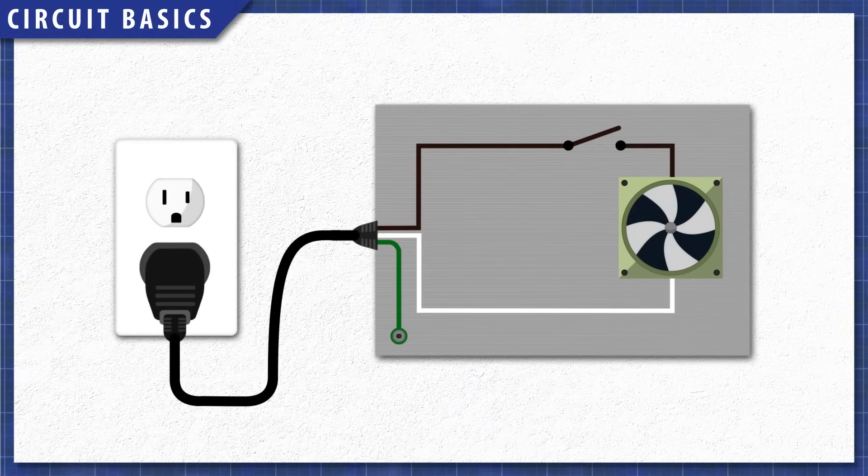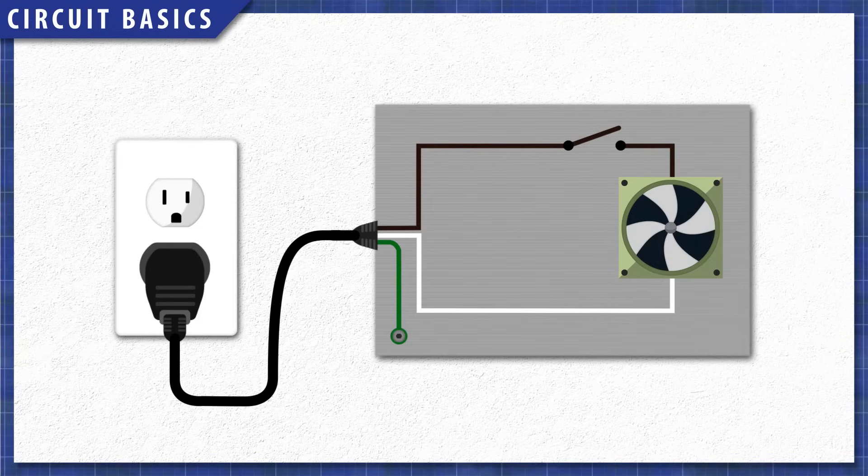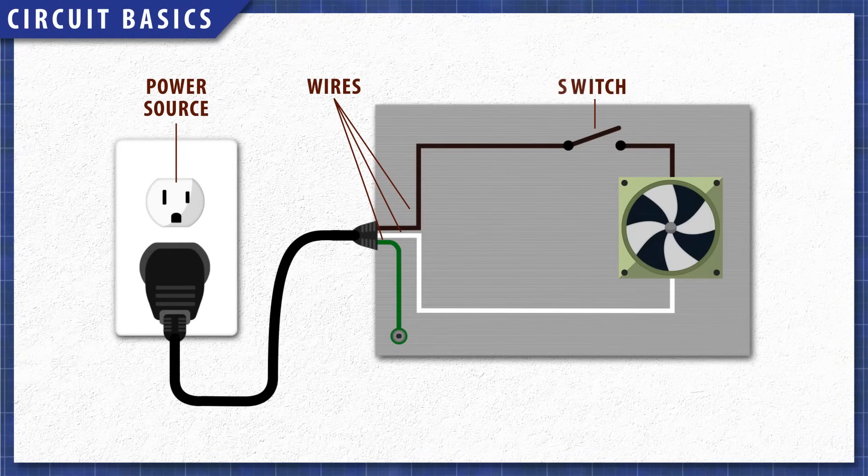A circuit is a series of interconnected paths that carry an electric current. All circuits will have a power source, wires or conductors, a switch for controlling the circuit, and a device or load that offers resistance to the circuit.